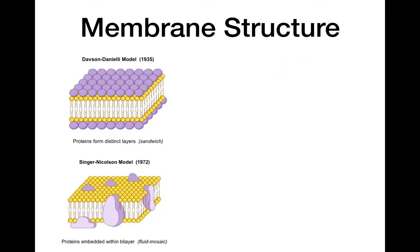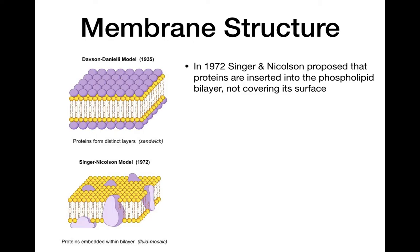Here are diagrams of these two models. The Davison-Danielli model, called the sandwich model, has protein on the outside with the bilayer in between. In 1972, Singer and Nicholson proposed the next model. They proposed there were proteins in the membrane, but the proteins are not covering the entire membrane — instead they're embedded in it, inserted into the bilayer and not covering the surface.